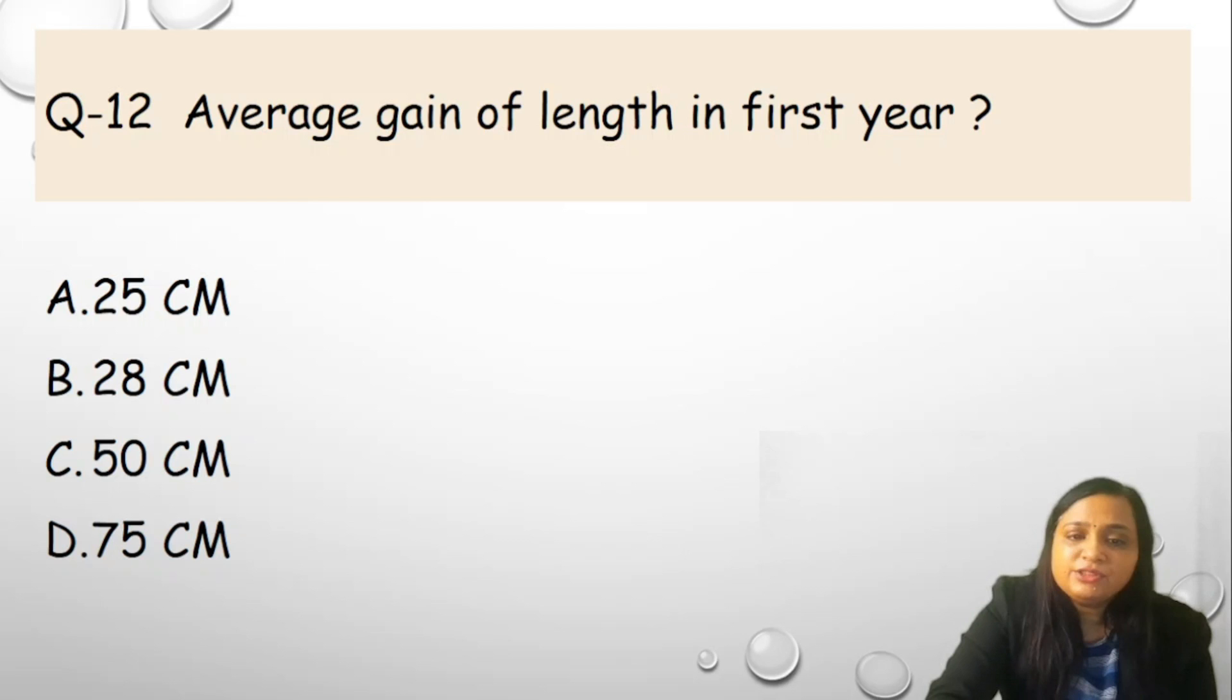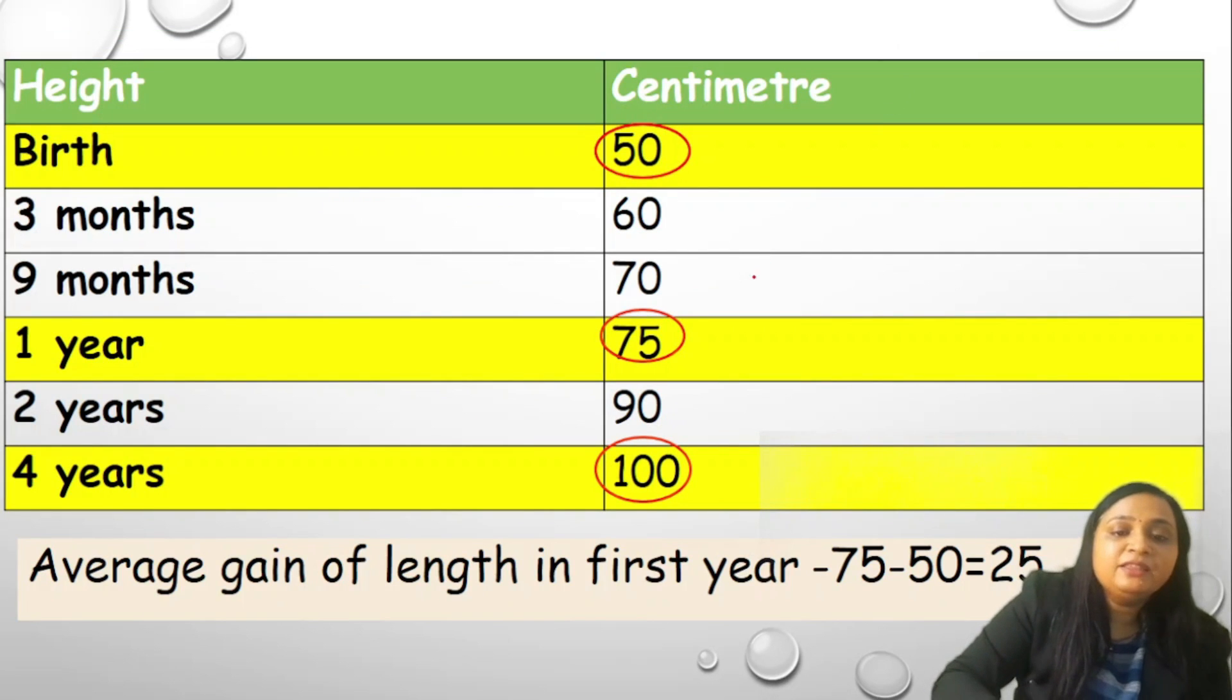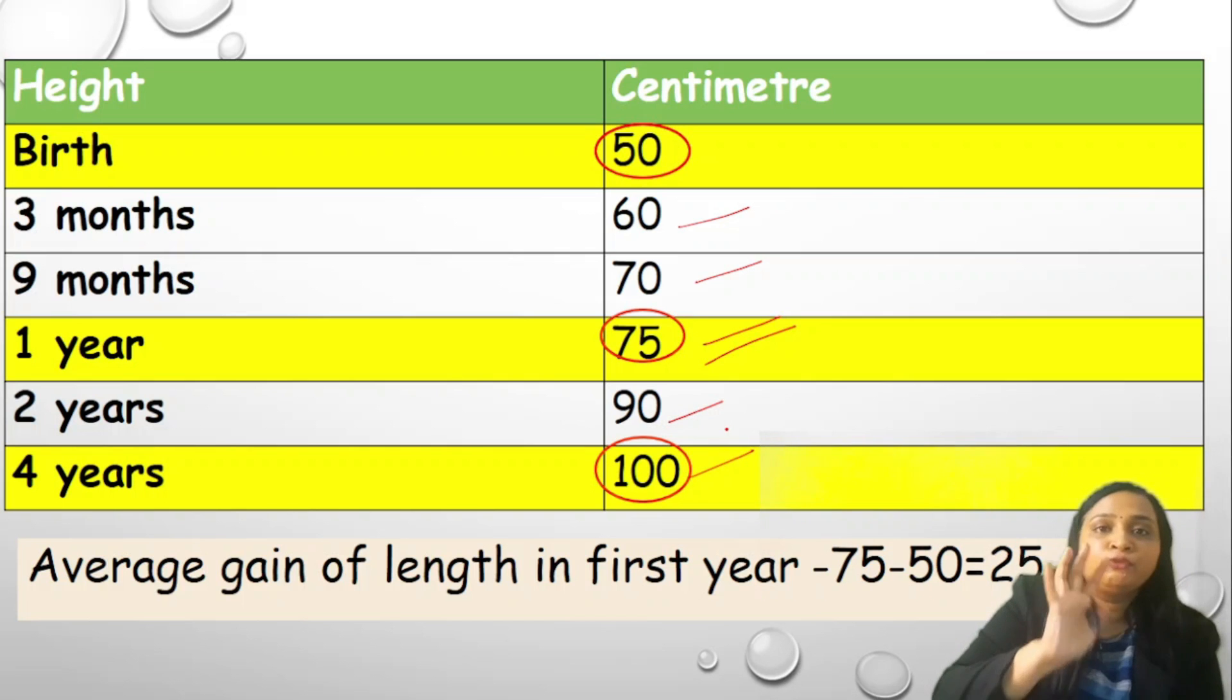Question number 12. Average gain of length in the first year. Again, it is a repetition of the question. A 25 cm, D 28, C 50 or D 75. Correct answer is 25. We all know that by the age of 1 year child gains the height of 75, 60 at 3 months and 70 at 9 months, 90 at 2 years and 100 at the age of 4 years. You have to remember these 4 numbers in your mind. 50, 60, 70, 75, 90 and then 100.